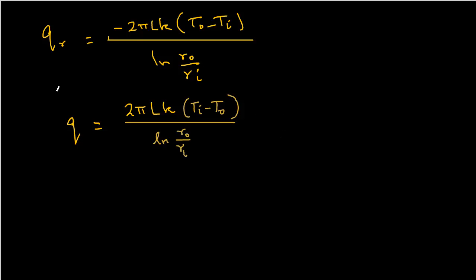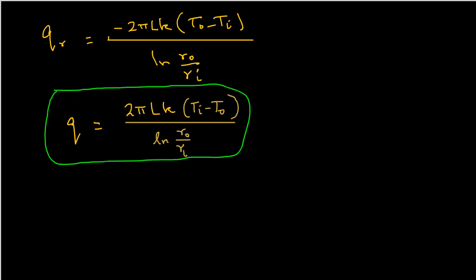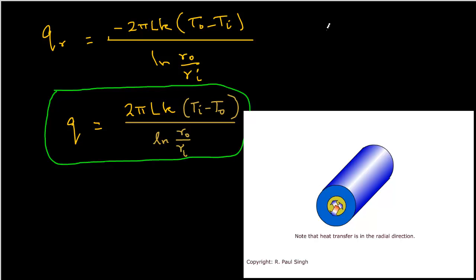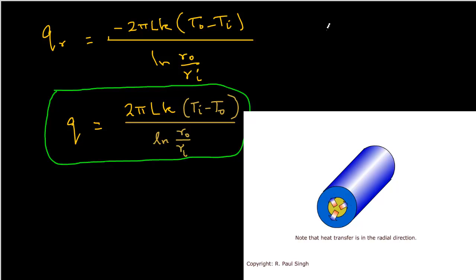That is the rate of heat transfer in radial coordinates for a cylindrical pipe. Note that this looks a little more complicated than the expression for a rectangular wall. The reason is the radius term — when integrating, the radius was in the denominator, giving us the natural log term. Also, as heat transfers through the pipe wall, the radial term keeps changing: the peripheral area increases continuously from the inside radius r_i to the outside radius r_o.